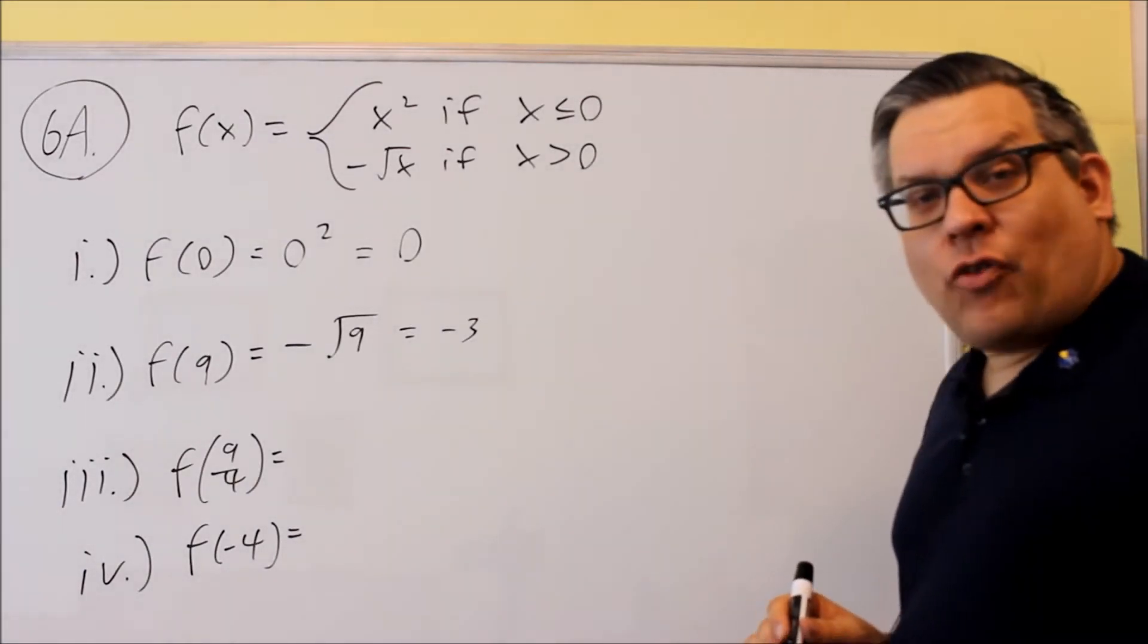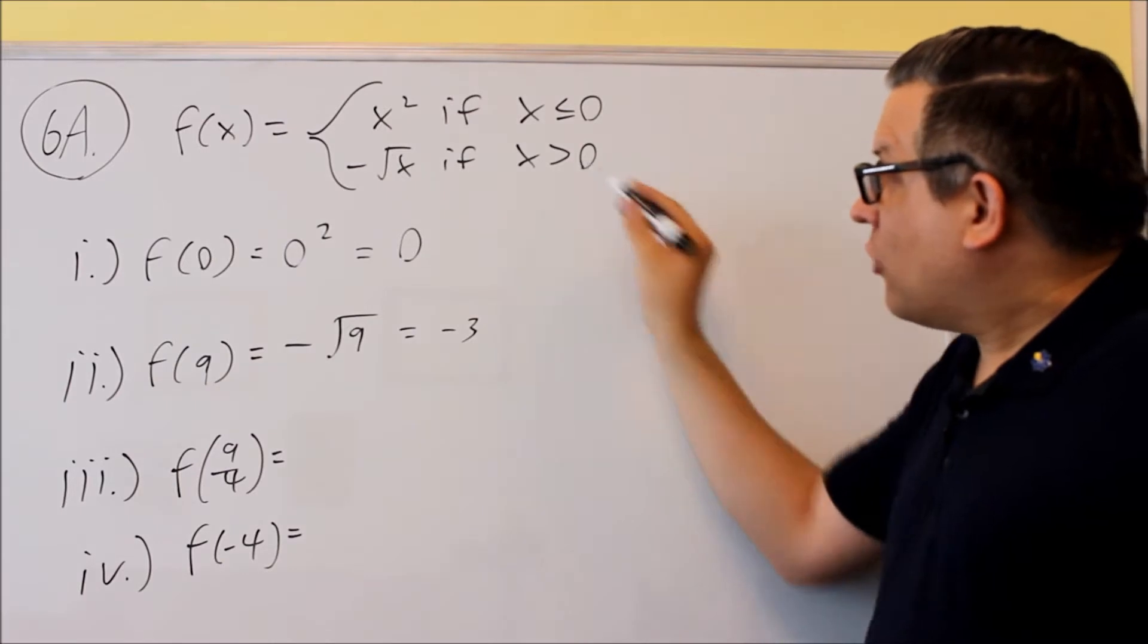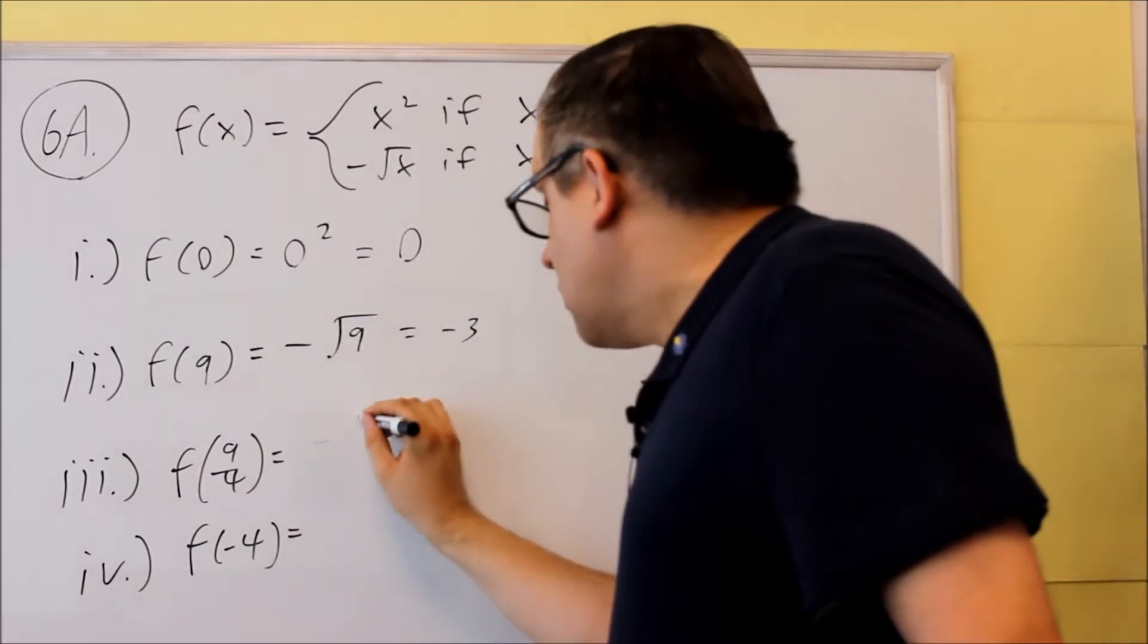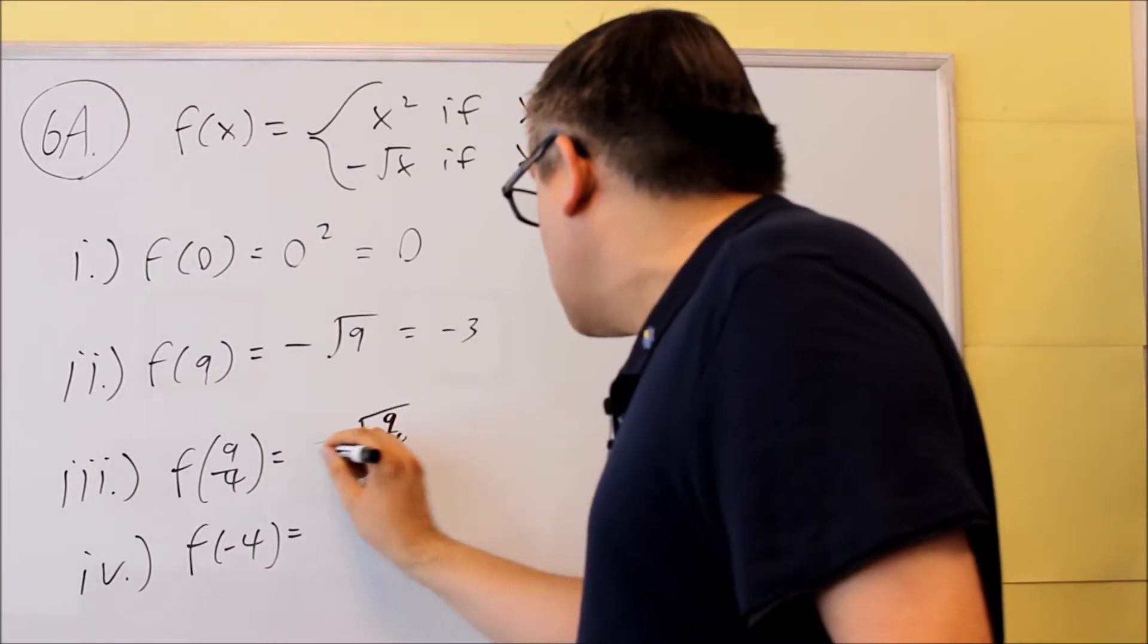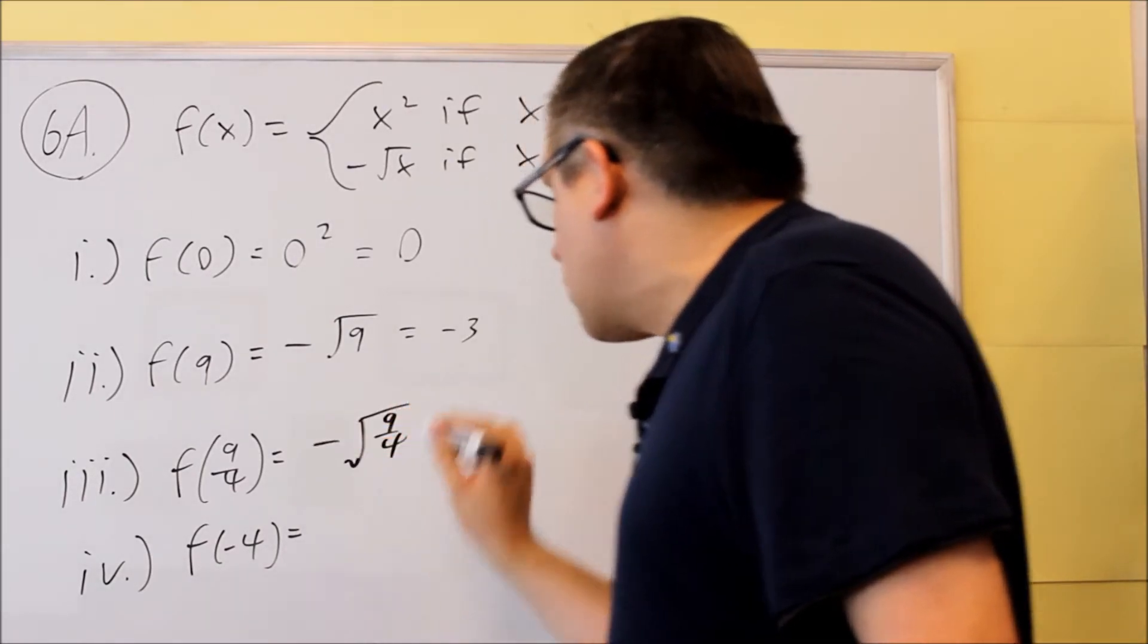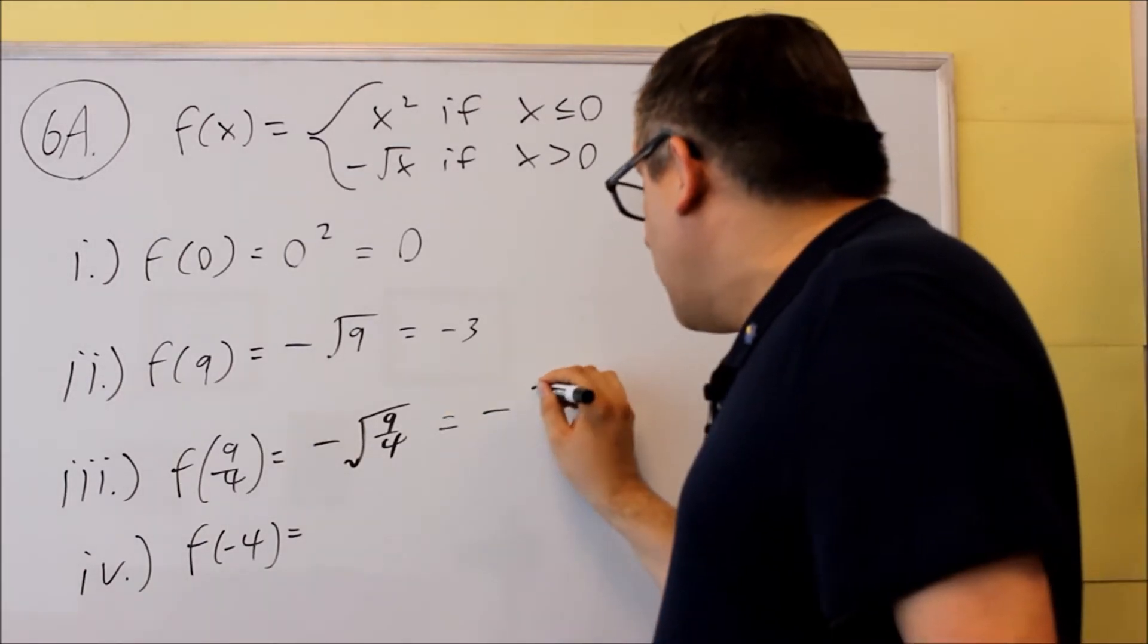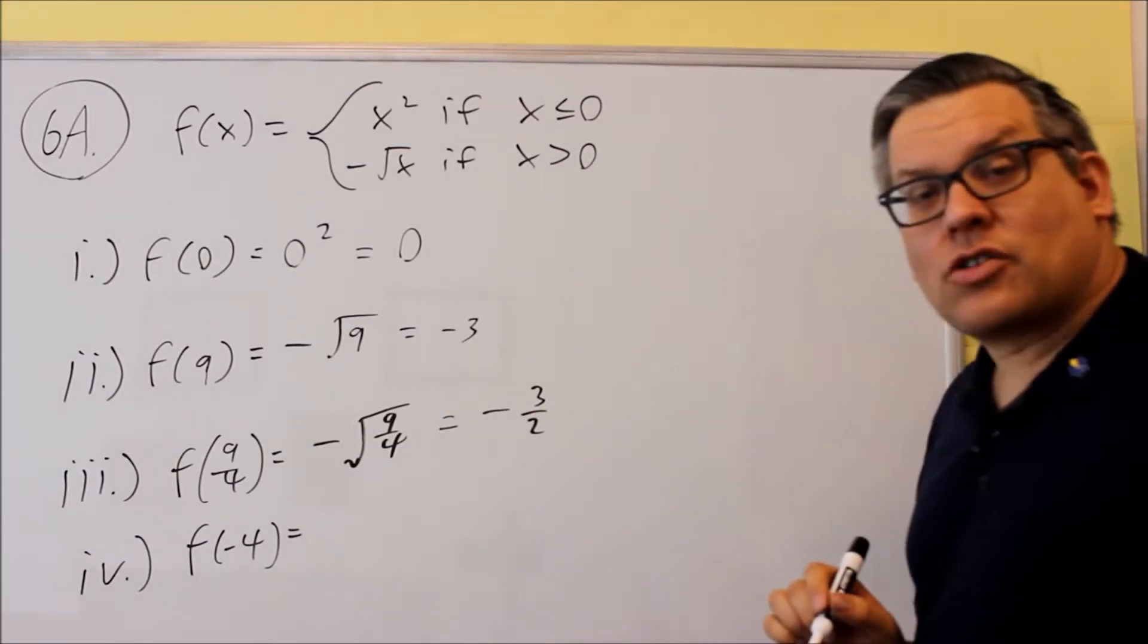Next, nine-fourths. Nine-fourths is positive, that would be a number greater than zero, so we're going to put it into the second equation again. So square root of nine-fourths. That means that you're going to square root the top number and bottom number separately. We get negative three-halves. That's our answer for that one.